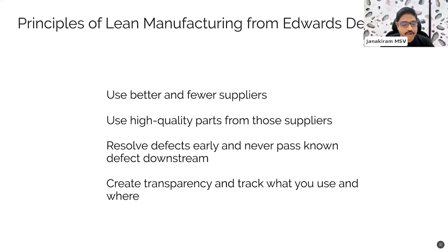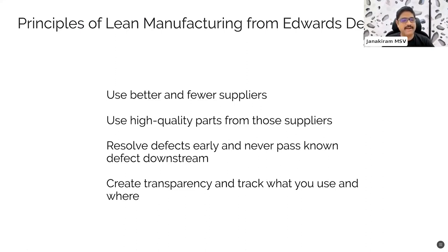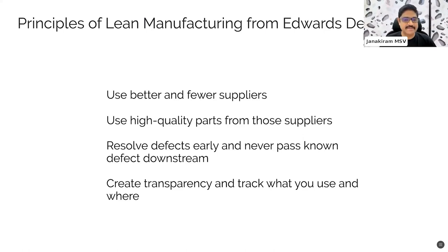Downstream is where it is used by the consumer; upstream is where it is assembled. If there is a defect found upstream — either by the original equipment manufacturers (OEMs) or by the car manufacturer — they should stop the process and halt it right away instead of passing it to the downstream consumer. Finally, create transparency and track what you use and where you use it. They have to maintain a checklist — a bill of material — noting that tires come from this supplier, the engine from this supplier, and so on. These are the lean manufacturing principles from Edwards Deming, defined in the 1930s, but still highly relevant and applied by many auto manufacturing companies today.